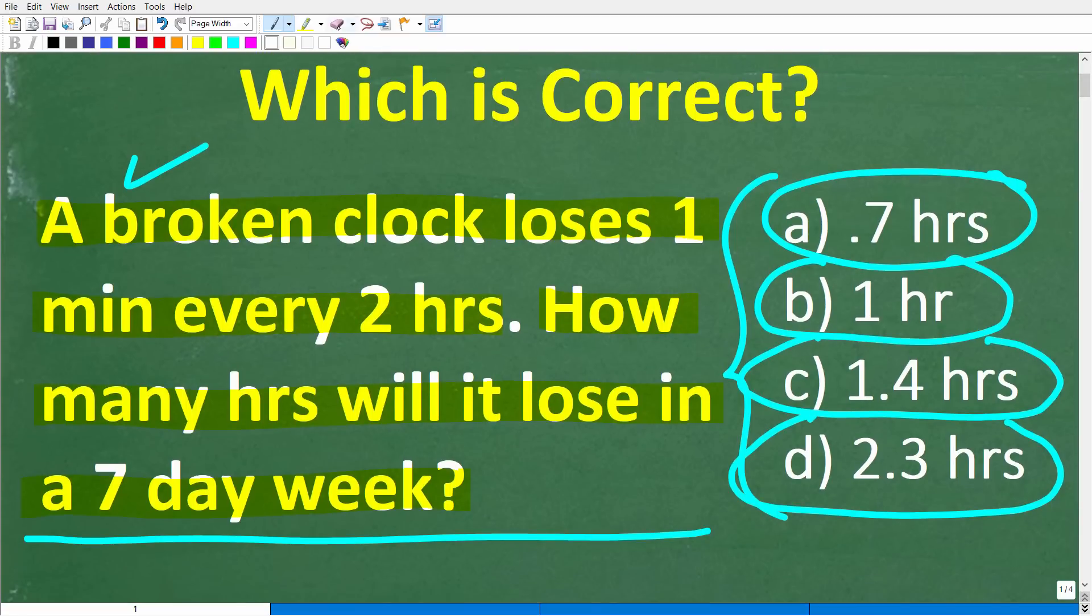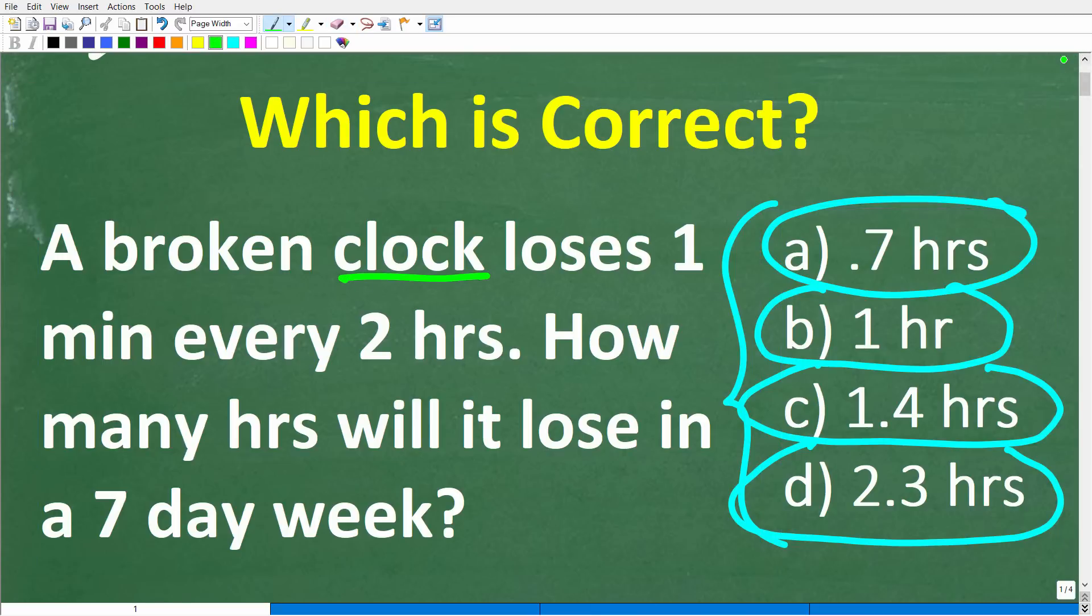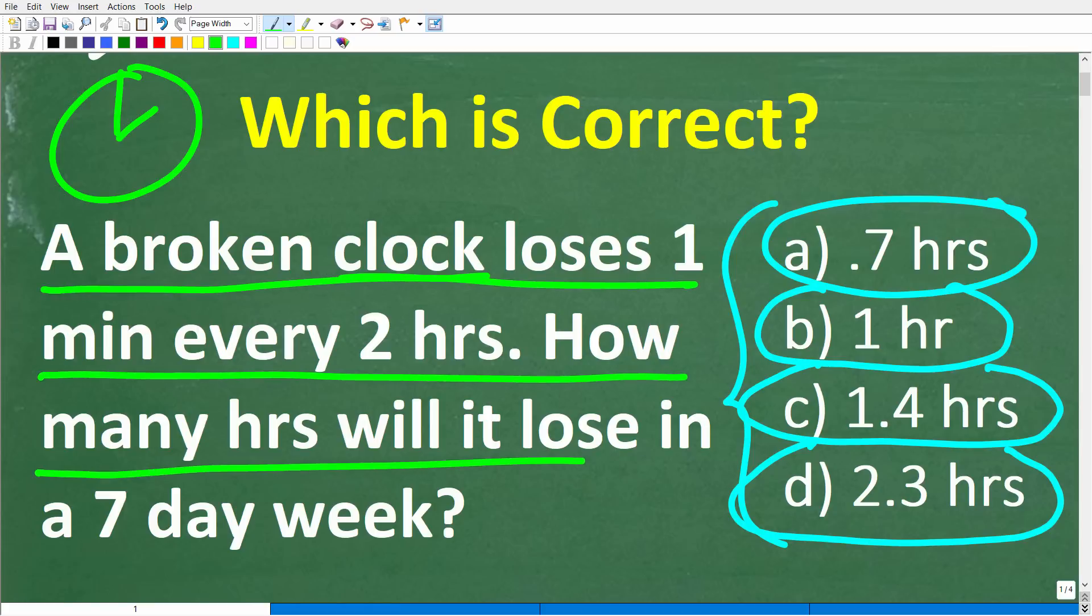All right, so one more time, here is the problem. Now, I'm going to give you a hint. I'm going to think of this clock as an old-school clock with minute hands and hour hands. You might want to think of the clock in that manner, but it's not necessary. But we do have a broken clock that loses one minute every two hours. How many hours will it lose in a seven-day week?